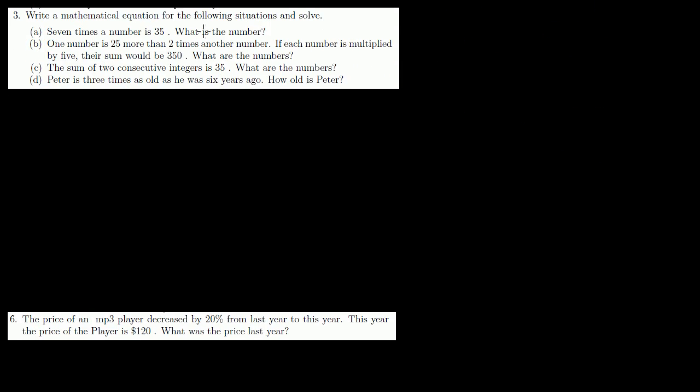Problem 3. Write a mathematical equation for the following situations and solve. All right, let's do part A. 7 times a number is 35. What is the number? So whenever someone says a number, I'll just use the variable x. I could use any variable. I could say y or b or z or anything. But I'll go with x, because that's what I'm most used to and what's most typically done, unless you've already used your x. So 7 times a number, I'll say 7 times x is equal to 35.